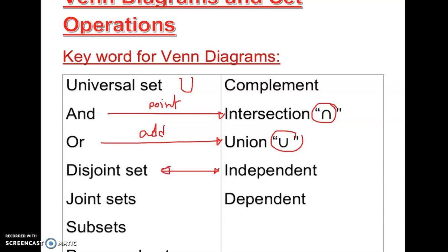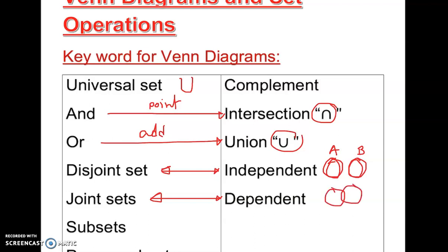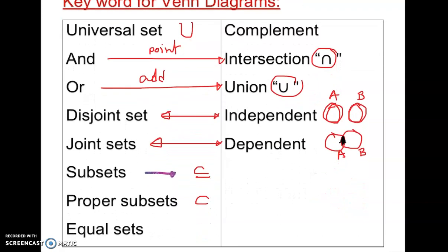Disjoint means independent — we'll come back to this. When we say joint, it means dependent — one set shares something with another. So independent means sets don't share anything: set A has one element, set B has another, and they are disjoint. But if there is something common between them, that space is shared — they are joint, or intersecting. We also know what a subset is, and a proper subset, and we have equal sets too.